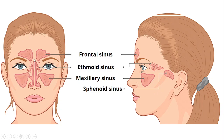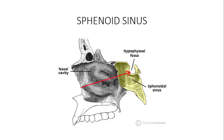Looking at the slide, here is the frontal sinus, and these are the ethmoidal sinuses within the ethmoidal bone. This is the maxillary sinus, and the sphenoid sinus is found posterior to the nasal cavity. Regarding their shapes: the frontal sinus is triangularly shaped, the ethmoidal sinus is in the form of a pyramid, and there are several groups of ethmoidal cells.